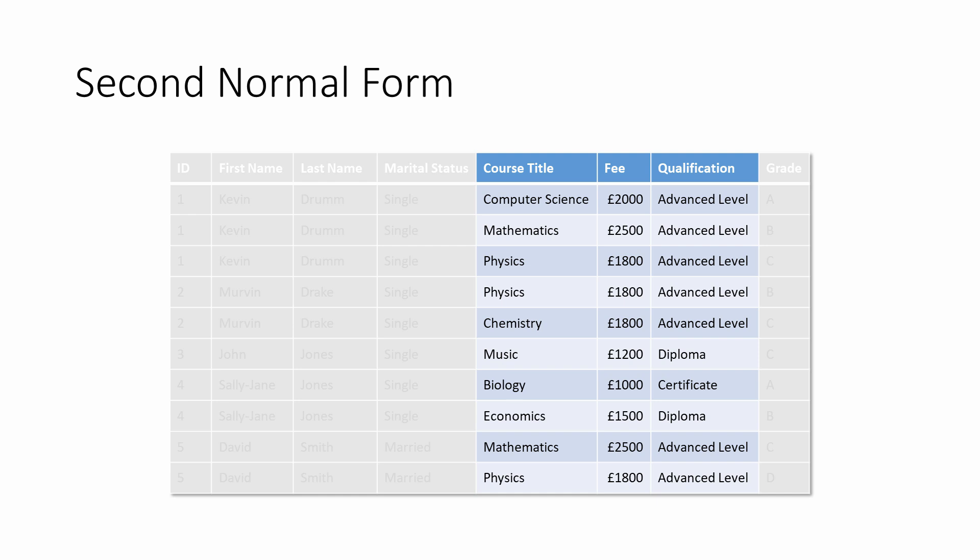The table also contains various data just about courses: the course title, fee and qualification. Examine the data and you can see that the course title is unique for each course; the fee and qualification are both about the same thing as the course title. Change the course title and it becomes a different course, so you need to change the fee and the qualification as well. They are functionally dependent on the course title, and it's the only thing that they're functionally dependent on.